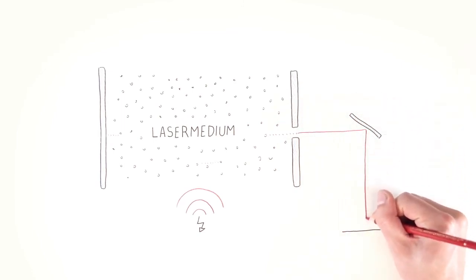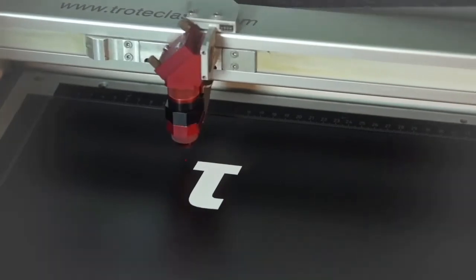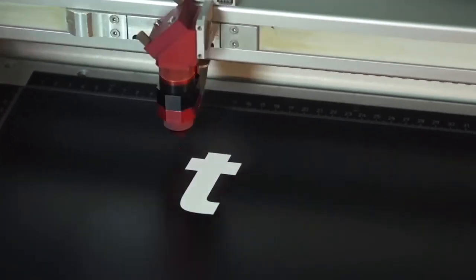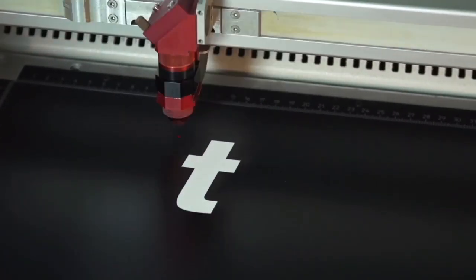A directional beam is formed. This beam can leave the laser through the partially transmissive mirror and is directed onto the material, where it engraves, marks, or cuts the desired motif.